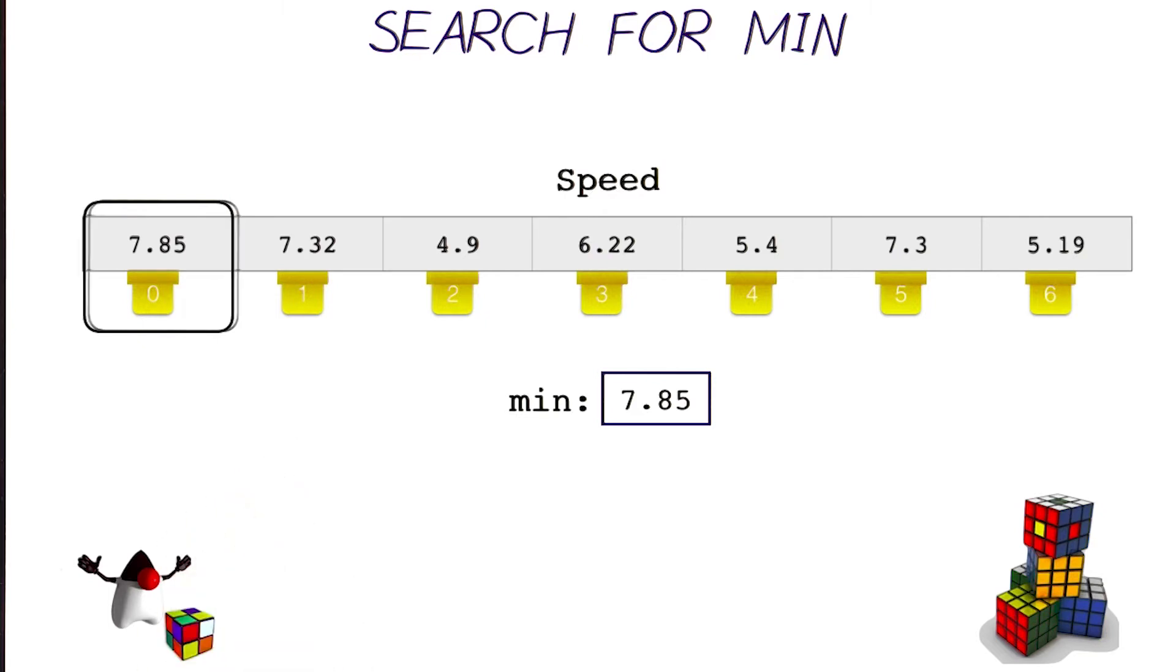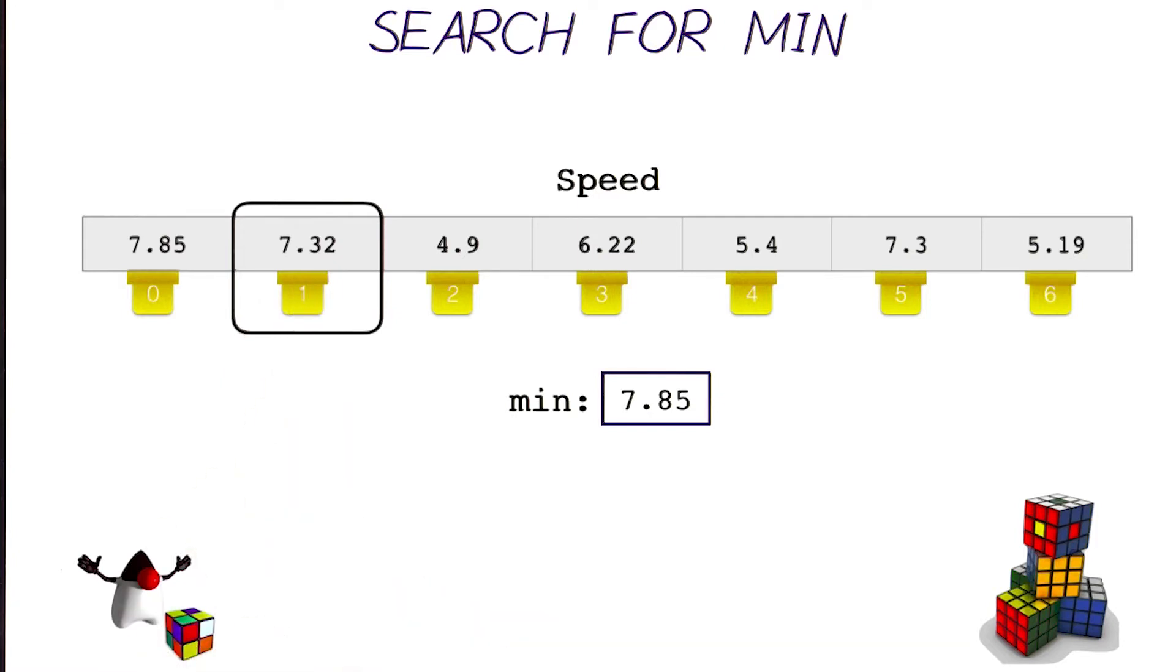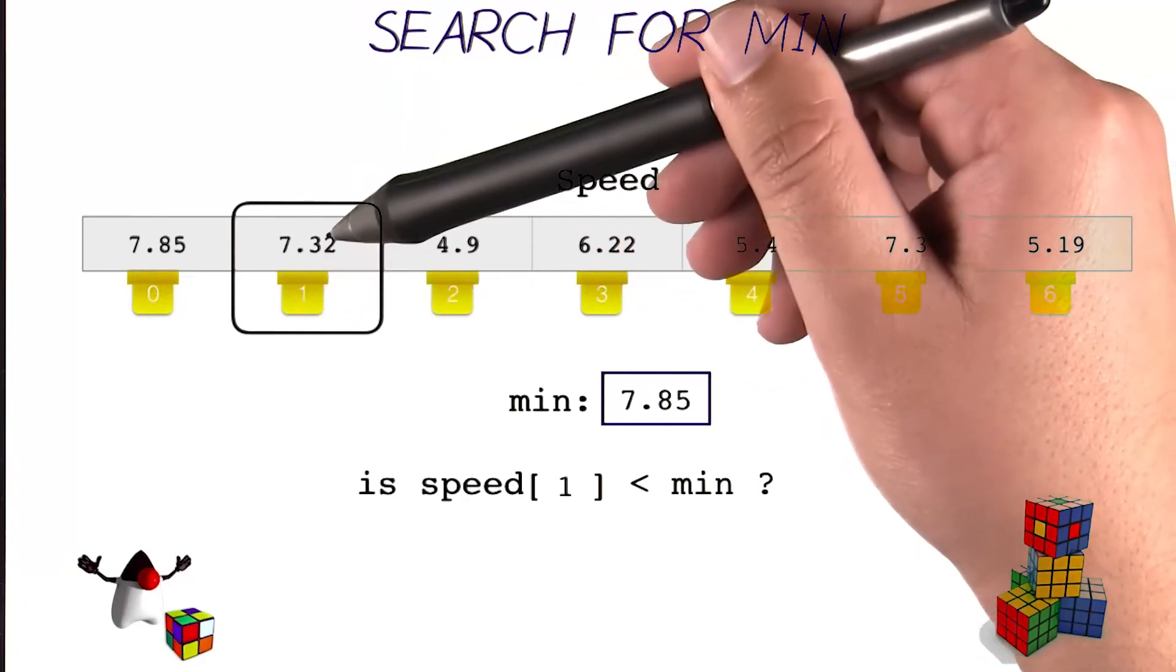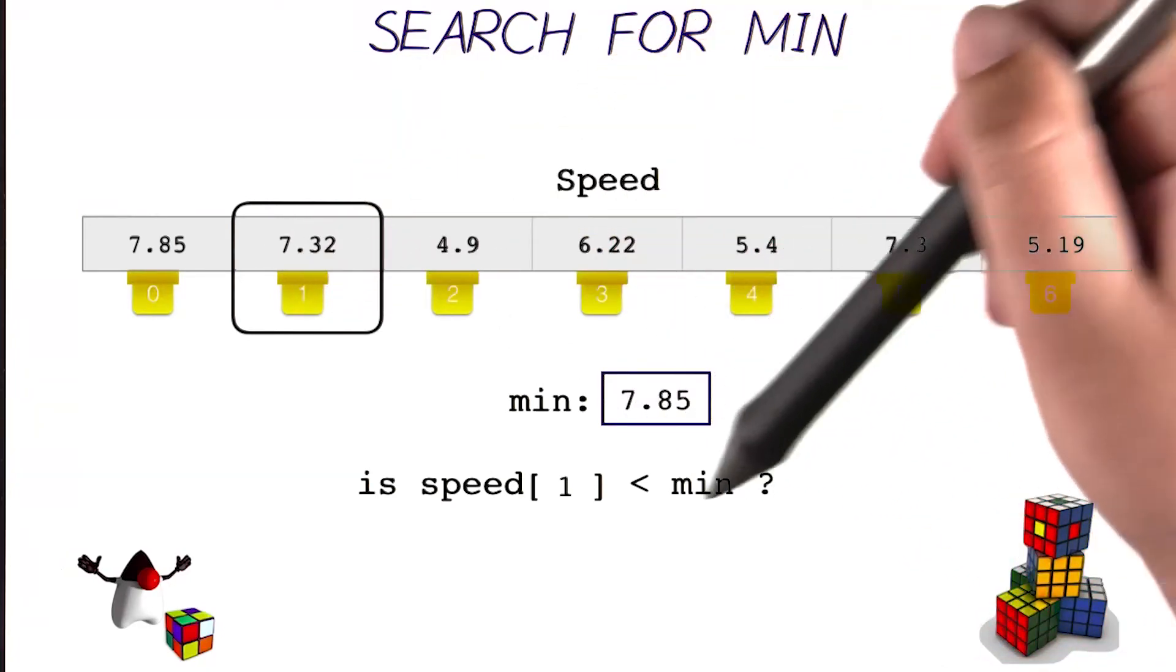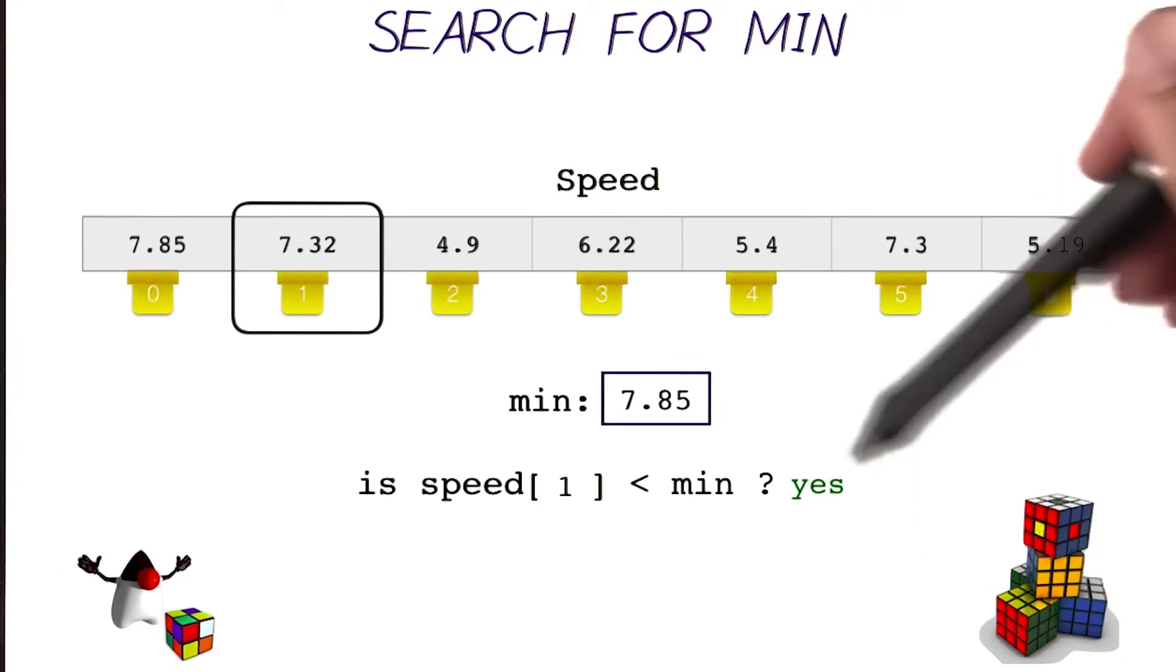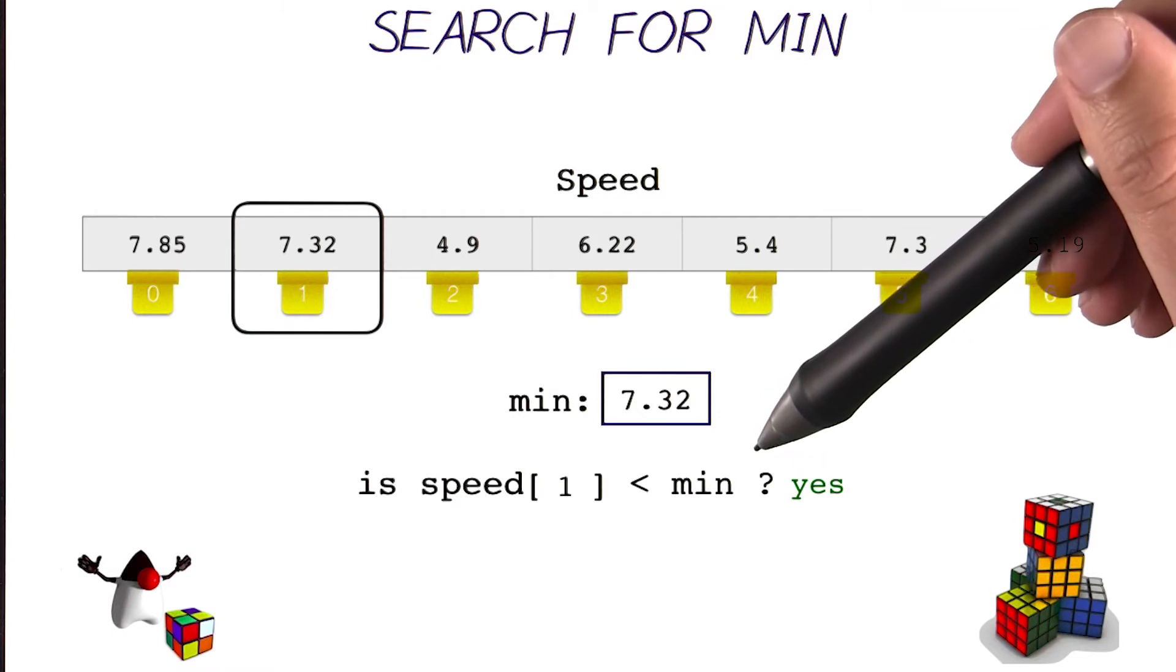And then we move on, and the second value is 7.32. So I ask this question: is speed of 1, is this cell here smaller than our minimum? Yes, it is. So I update the minimum to get the new value in it, 7.32.